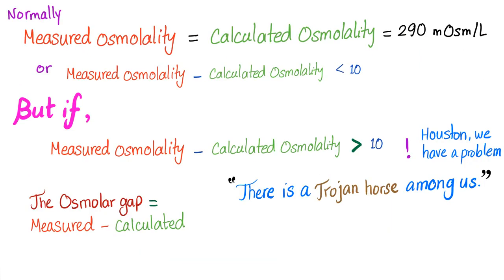Normally, measured osmolality equals calculated osmolality. There may be a slight variation — measured osmolality can be higher than calculated by 1, 2, maybe 5, but less than 10. If the difference between them is more than 10, Houston, we have a problem. This is called the osmolar gap. The osmolar gap is measured osmolality minus calculated osmolality. If the number is more than 10, there is a problem — there are foreign substances, Trojan horses, in your body, and it's the doctor's job to figure them out and kick them out.